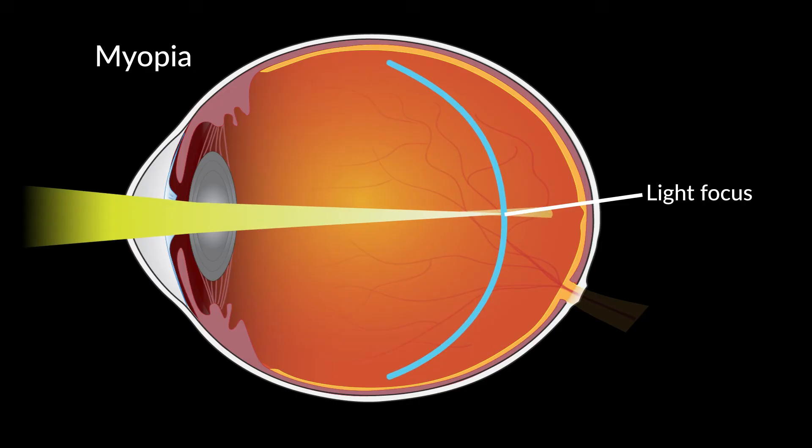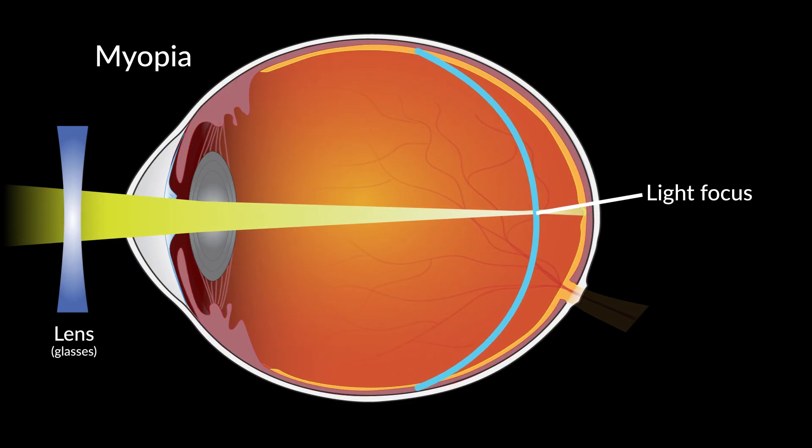In a myopic eye, light focuses in front of the retina, making faraway images blurry. Blurry distance vision can be corrected with lenses, which refract light entering the eye to refocus it properly on the central retina.